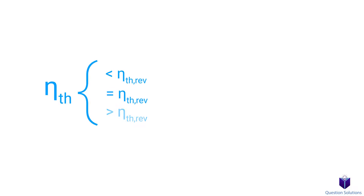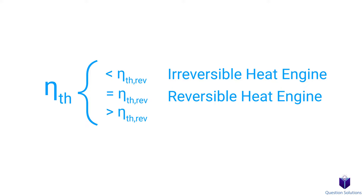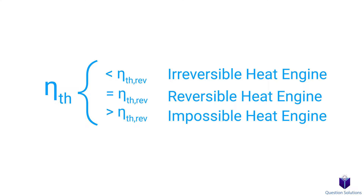If we compare the thermal efficiency equation to the Carnot efficiency equation, we can determine what type of heat engine it is. If the thermal efficiency is less than the Carnot efficiency, then it's an irreversible heat engine. If it's equal to the Carnot efficiency, then it's a reversible heat engine. And if it's greater, then it's an impossible heat engine.